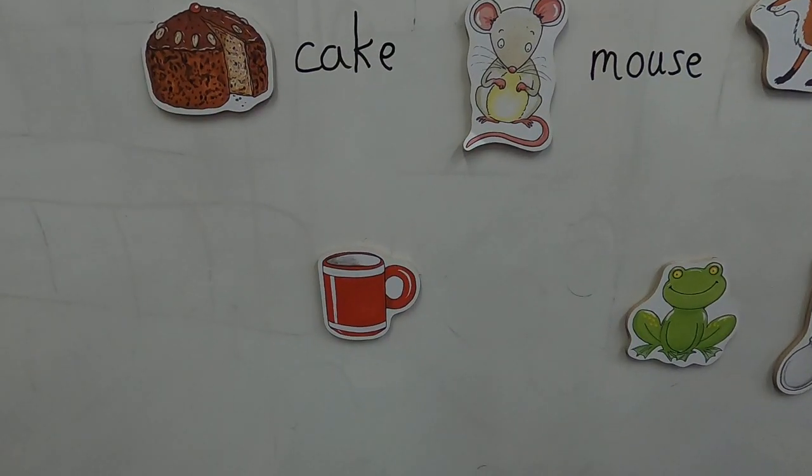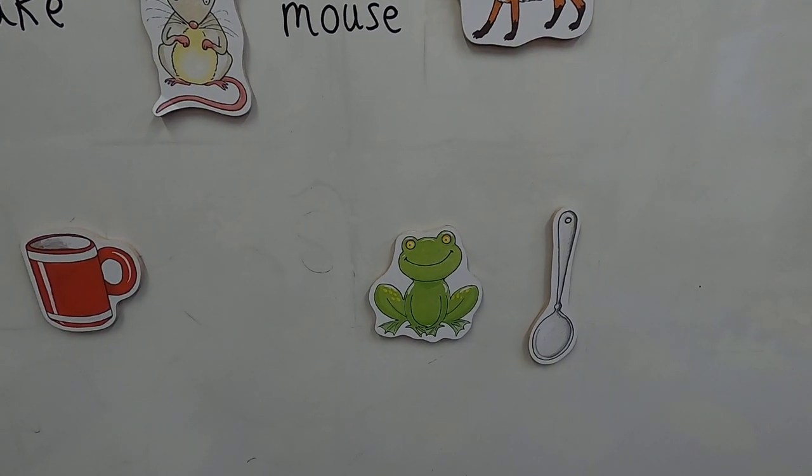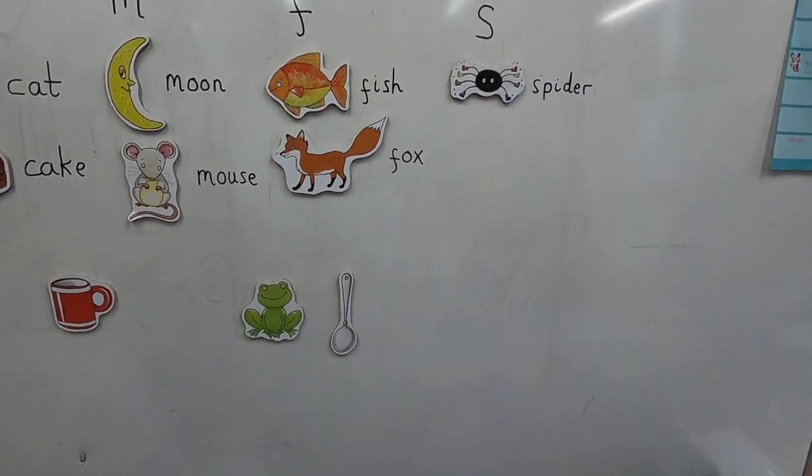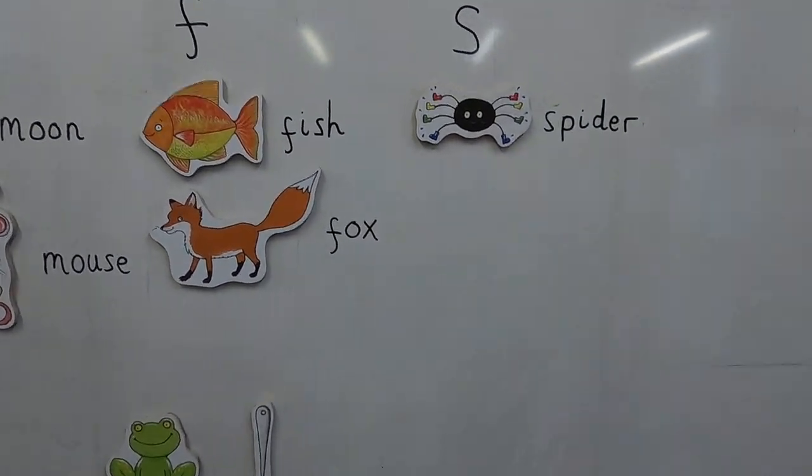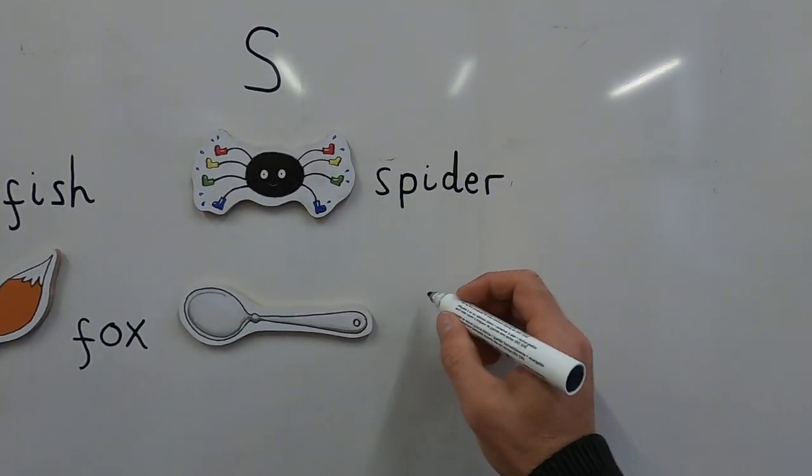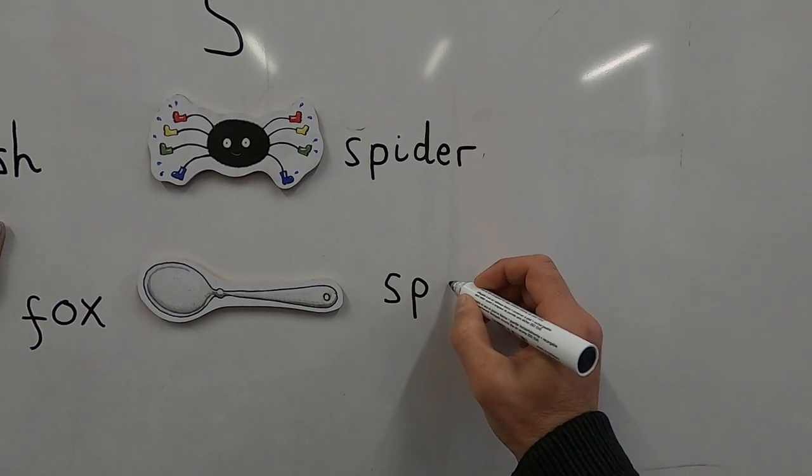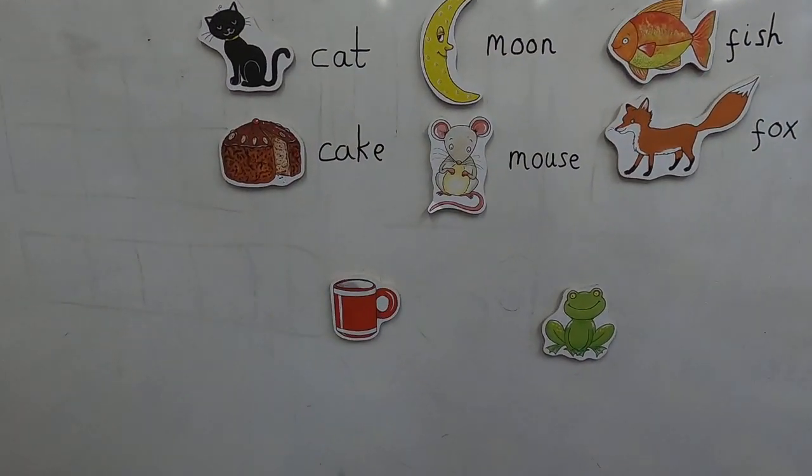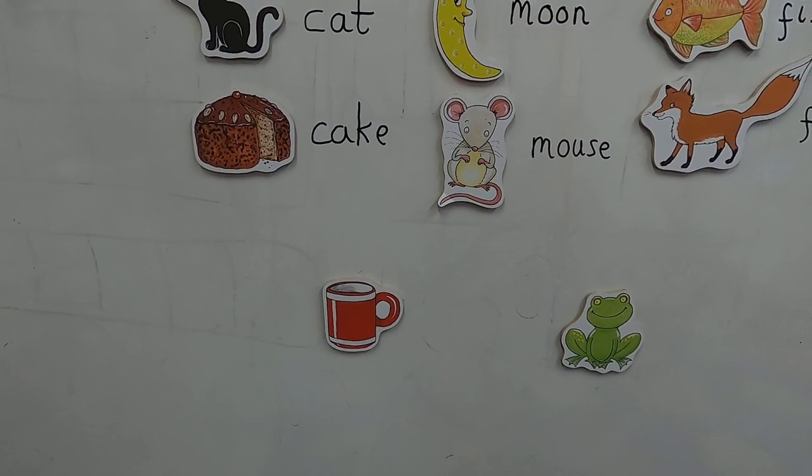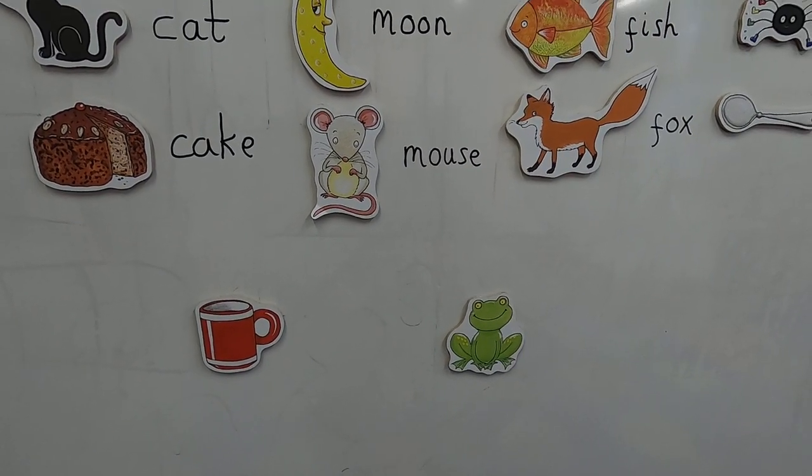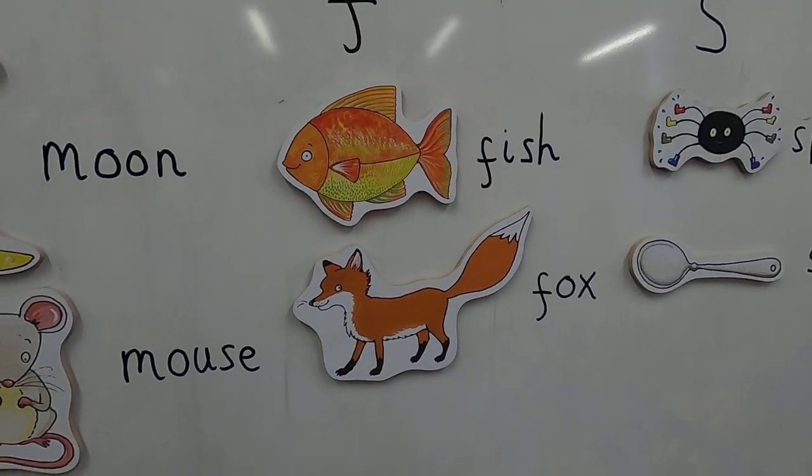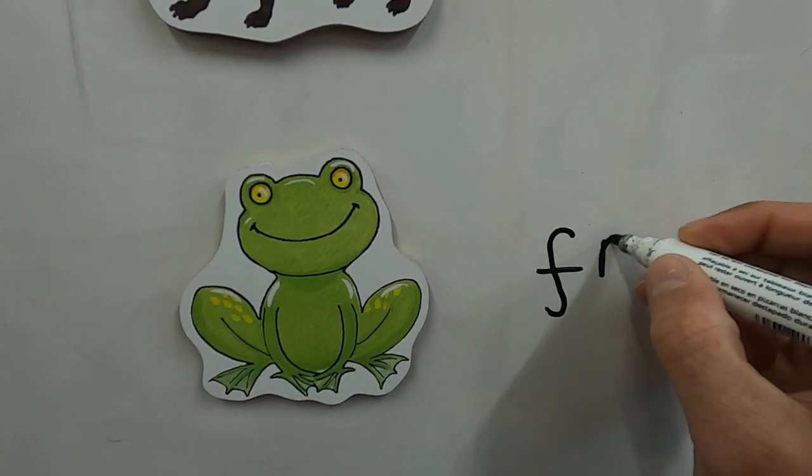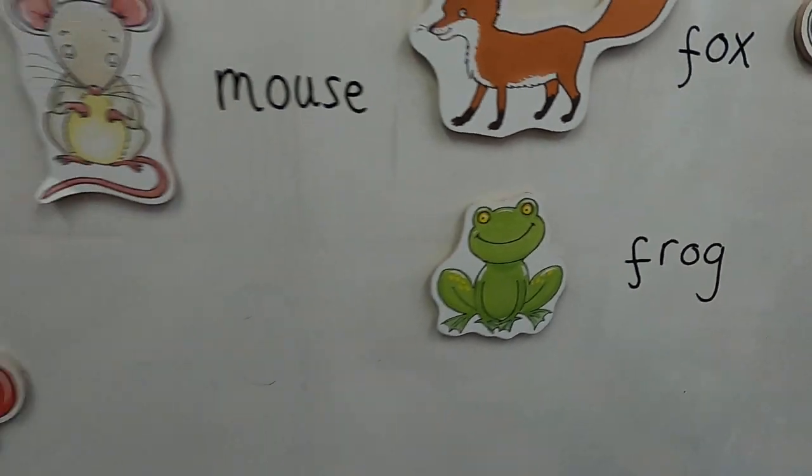And right, three more to go. Let's see. We've got a cup, a frog, and a spoon. Spoon, spoon, S, S, Simon, spoon. There we go. S-p-o-m, spoon. Okay. Two more. No M sounds. Frog, F-rog, F-f, fish, fox, frog. Good. F-r-r-r-og, frog. Good.